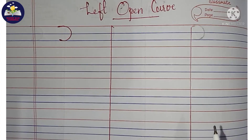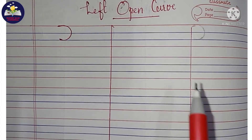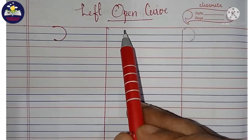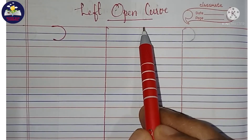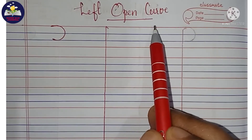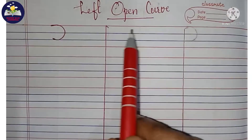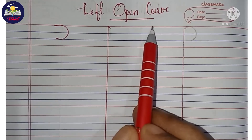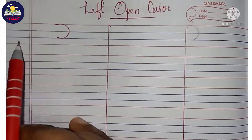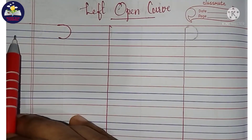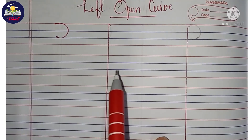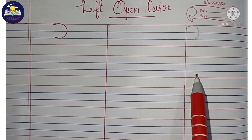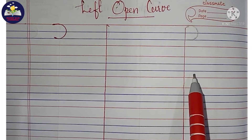Hello kids, today we are going to learn how to write left open curve in the four-line notebook. Parents should write the heading 'left open curve', write today's date on the margin, and draw two lines to make three columns.